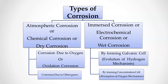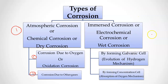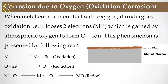To recap: there are two main types of corrosion — atmospheric corrosion (also called chemical or dry corrosion) and immersed corrosion (also called electrochemical or wet corrosion). In this lecture we are focusing on atmospheric corrosion, specifically oxidation corrosion — corrosion due to oxygen.